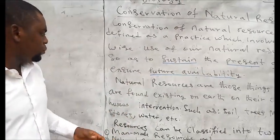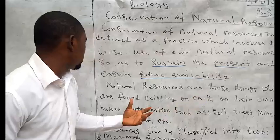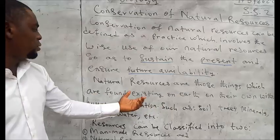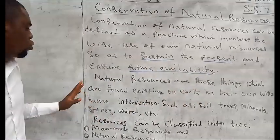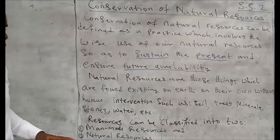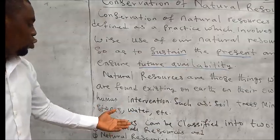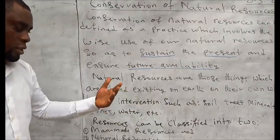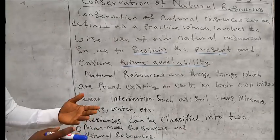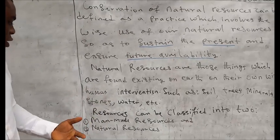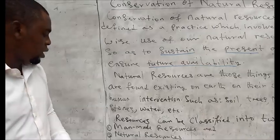Natural resources are those things found existing on their own without human intervention, such as soil, trees, minerals, stones, and water. Resources can be classified into two types, as I mentioned earlier: man-made resources and natural resources.